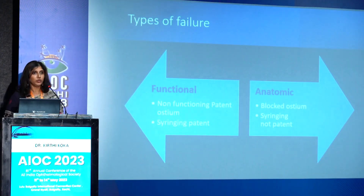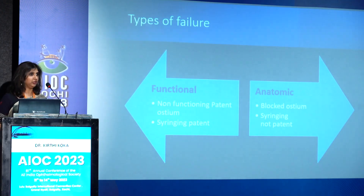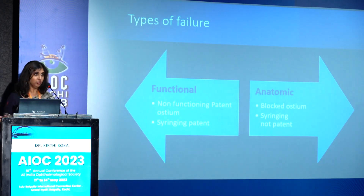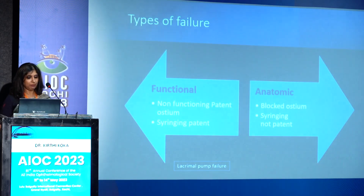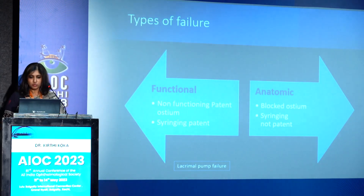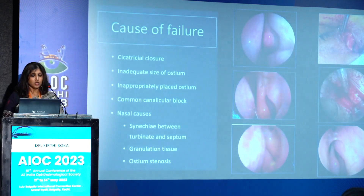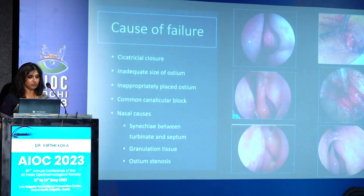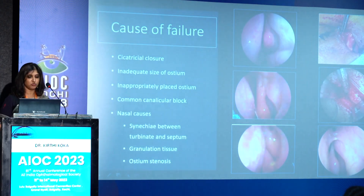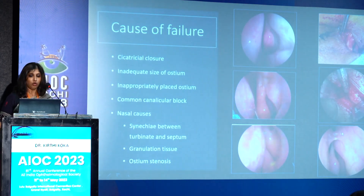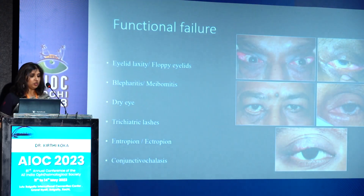When dealing with failure, it is very important to know what type of failure you have. There are two types — functional failure and anatomical failure. In functional failure, syringing will be patent and the ostium on nasal endoscopy will be patent, but the patient keeps complaining of watering. Anatomical failure is the one we most commonly deal with — the ostium is blocked or there is a block at some other level. Anatomical failures can be cicatricial with the entire ostium area blocked, a small ostium, or an ostium that is not properly placed — too inferior or too low — or synechiae in the nasal cavity.